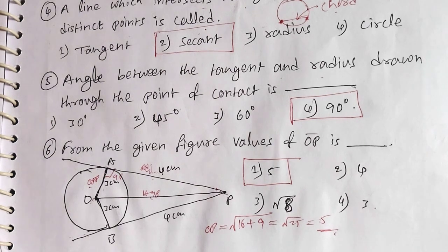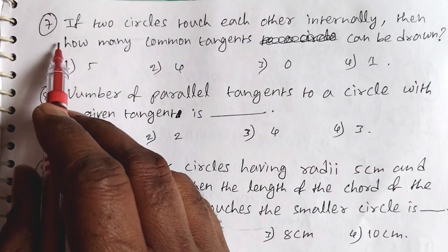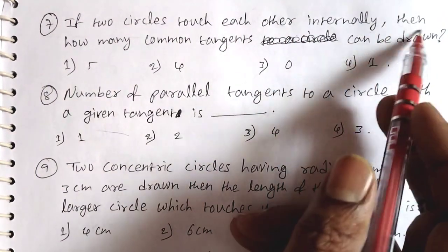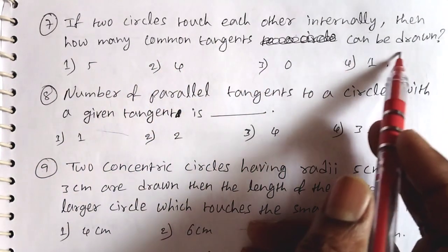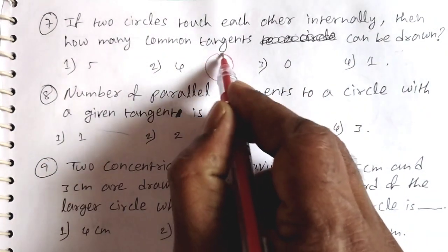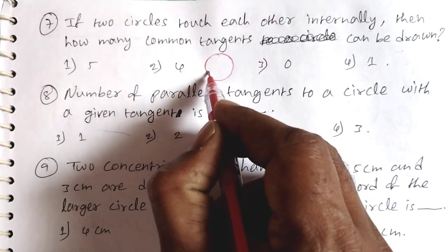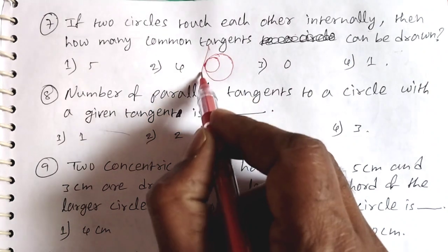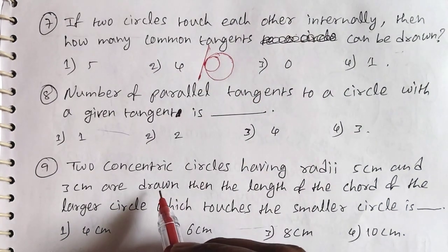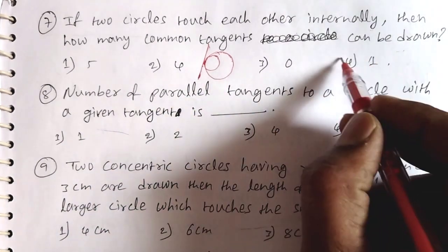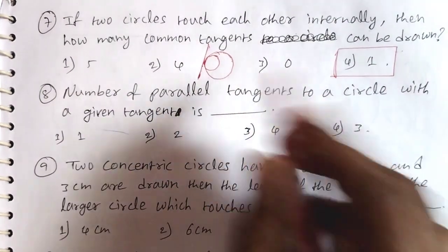Question 7: If two circles touch each other internally, then how many common tangents can be drawn? It is a very simple question. When two circles touch internally, there is only one point of contact, and only one common tangent can be drawn for both circles. The fourth option — one — is the answer.